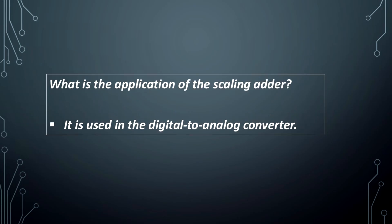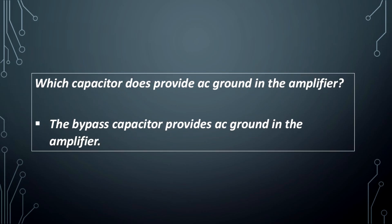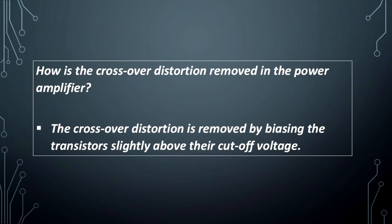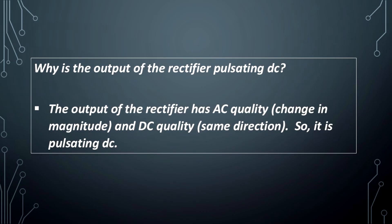What is the application of the scaling adder? It is used in the digital-to-analog converter. Which capacitor provides AC ground in the amplifier? The bypass capacitor provides AC ground in the amplifier. How is crossover distortion removed in the power amplifier? The crossover distortion is removed by biasing the transistors slightly above their cutoff voltage.